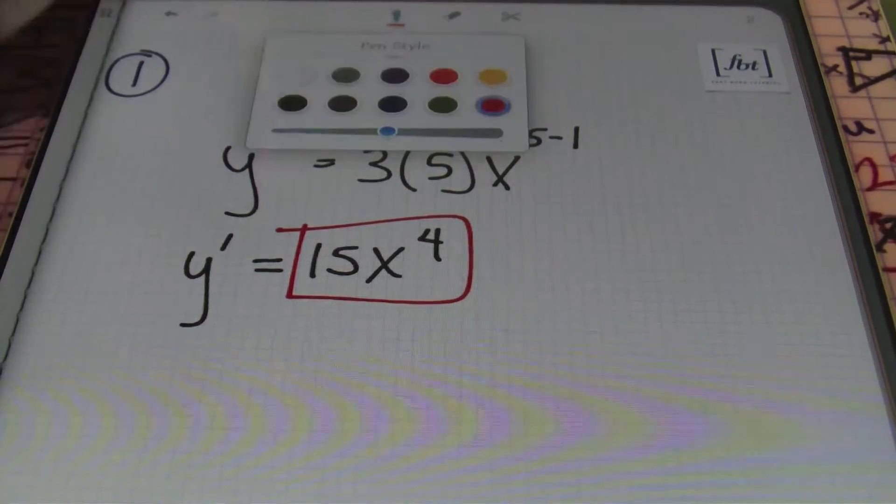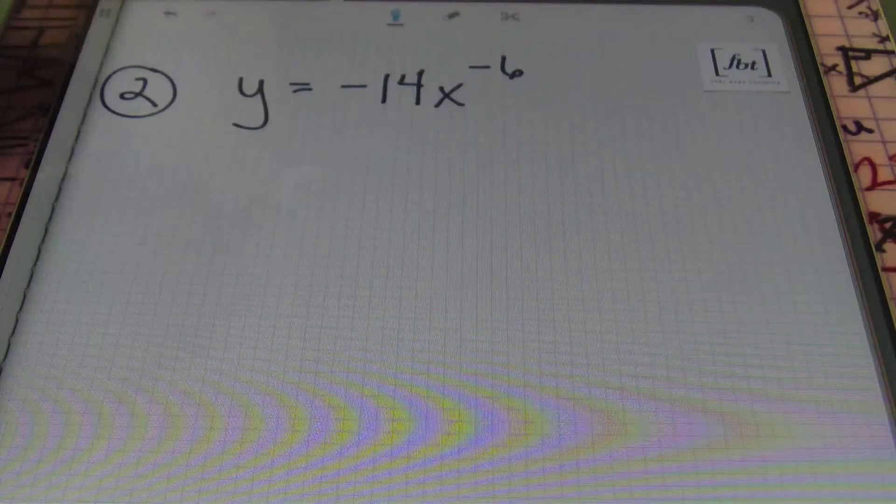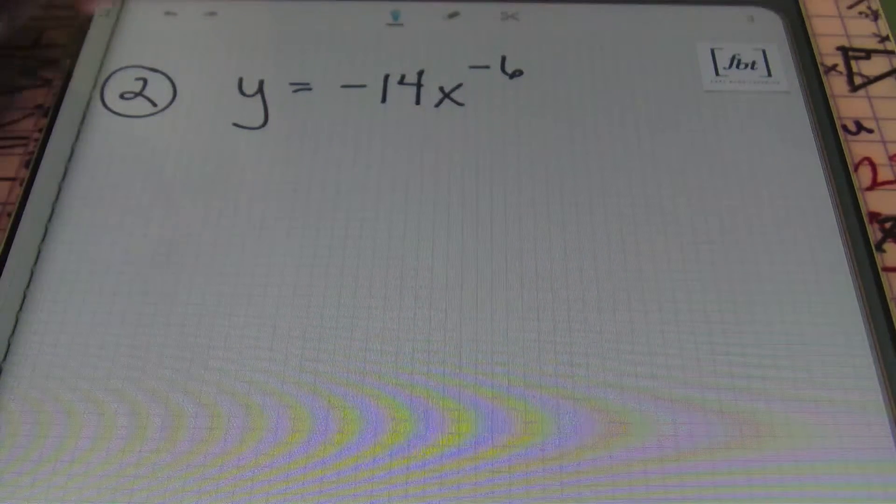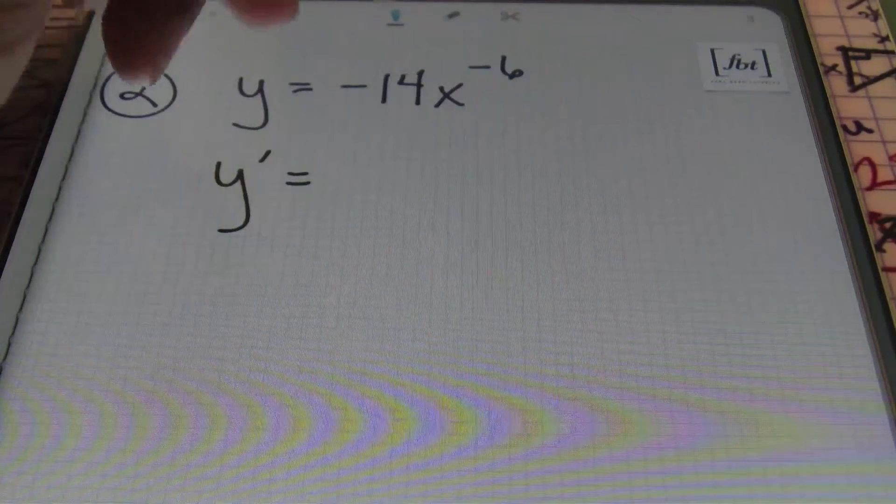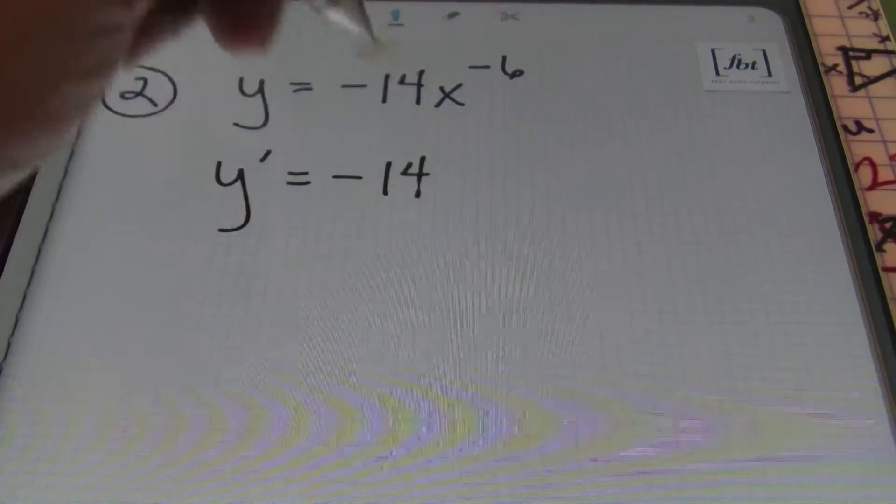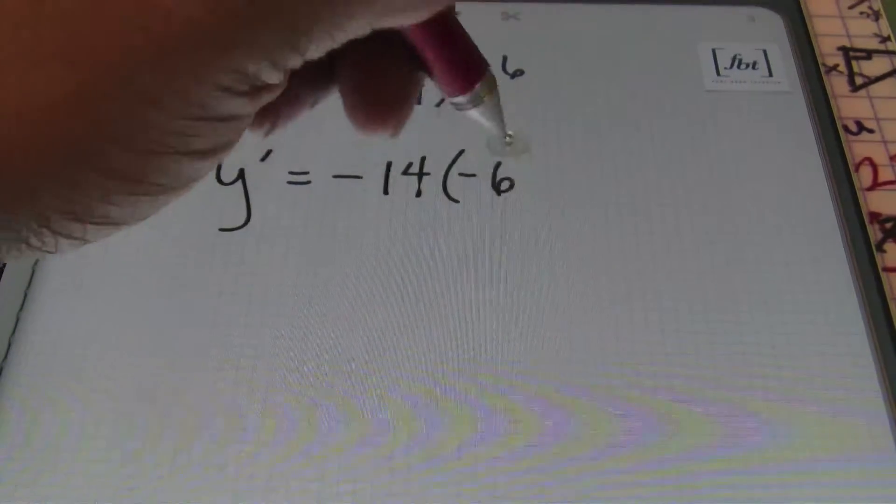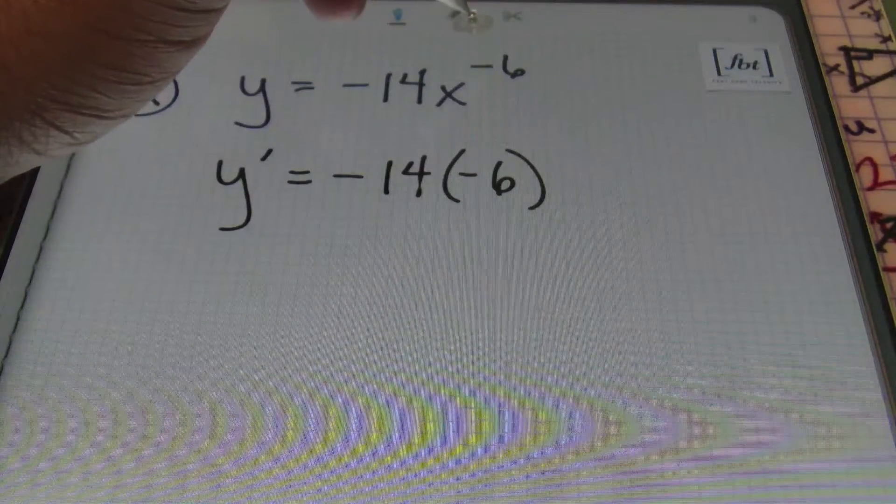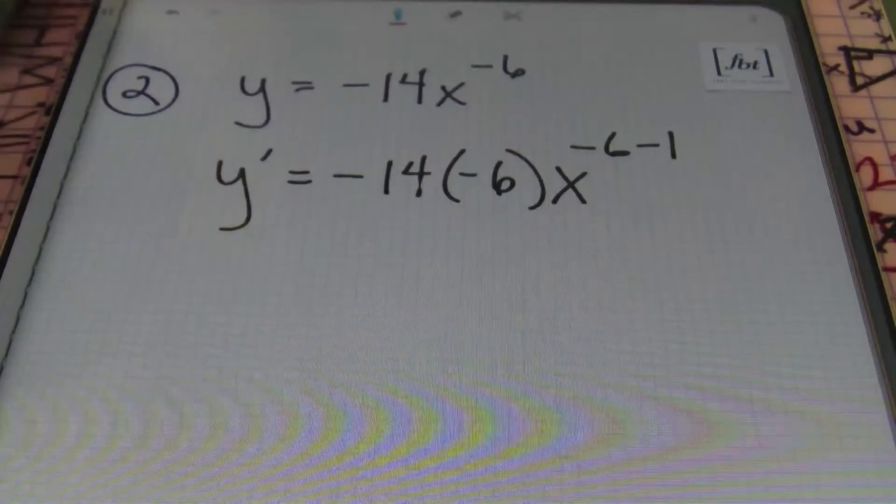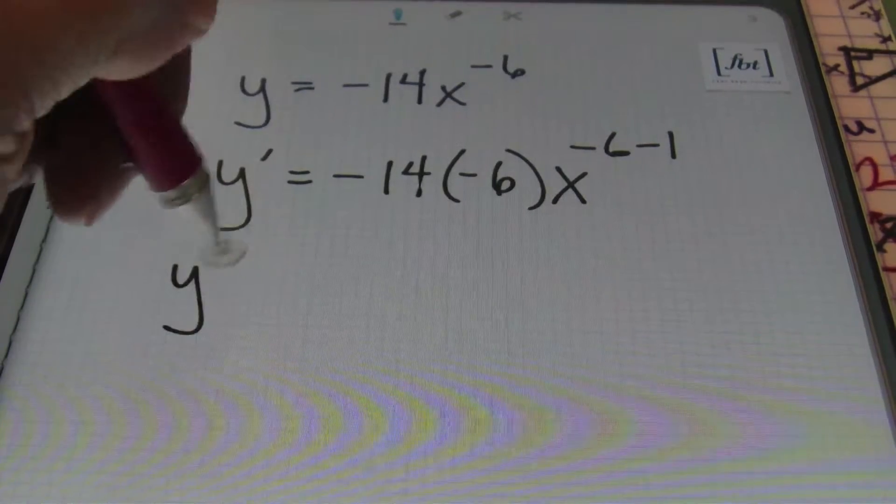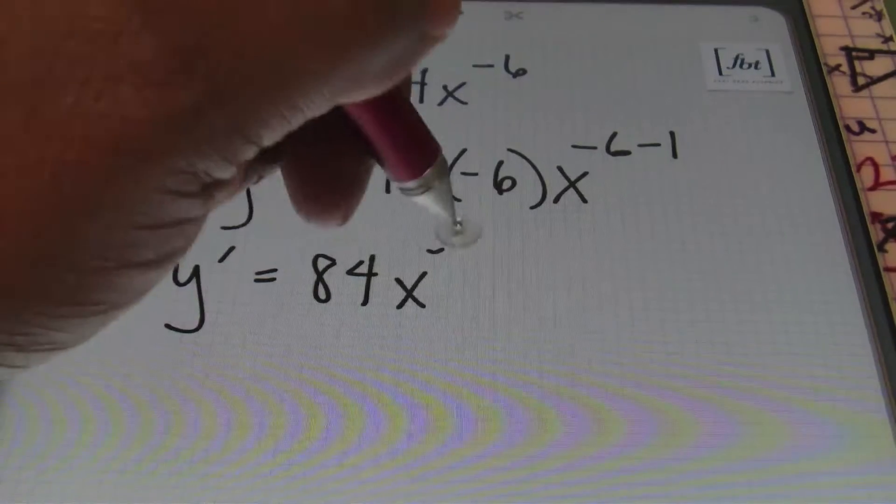Now let's look at another problem, problem number 2. In problem number 2, we have y equals negative 14x to the negative 6 power. So when finding a derivative of this problem, our y prime, or our first derivative, will always equal to our coefficient of negative 14 times the result of us using the power rule. So we'll bring down that negative 6, that's that exponent that we originally started out with, times our variable raised to the negative 6 minus 1. Okay, so the result of this is going to be y prime equals a positive 84x to the negative 7th power.